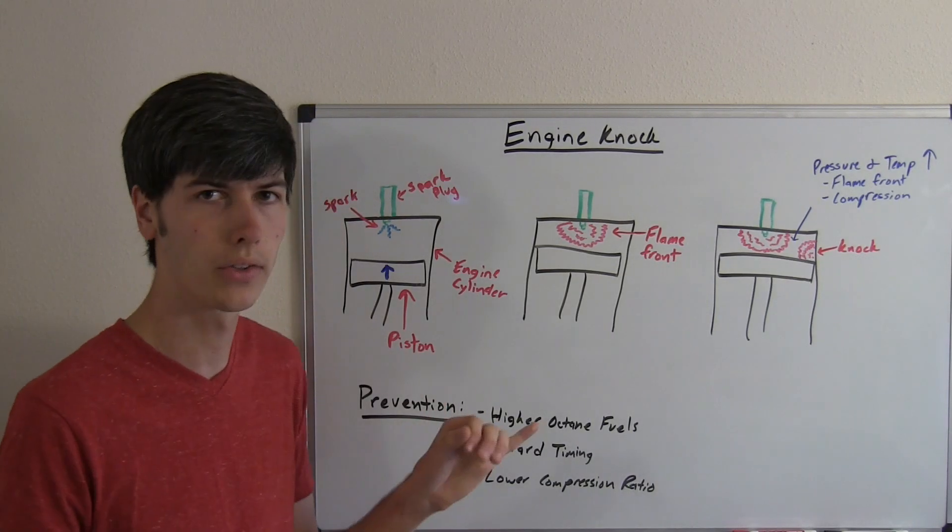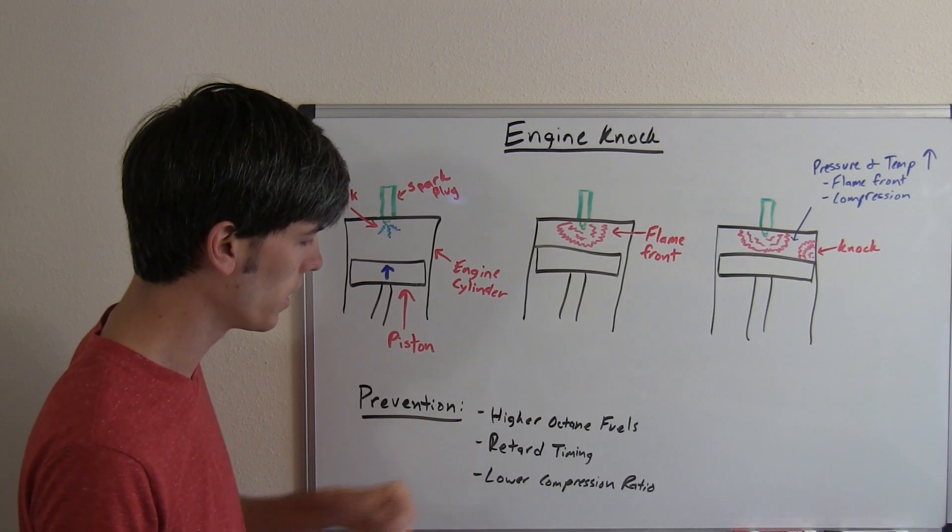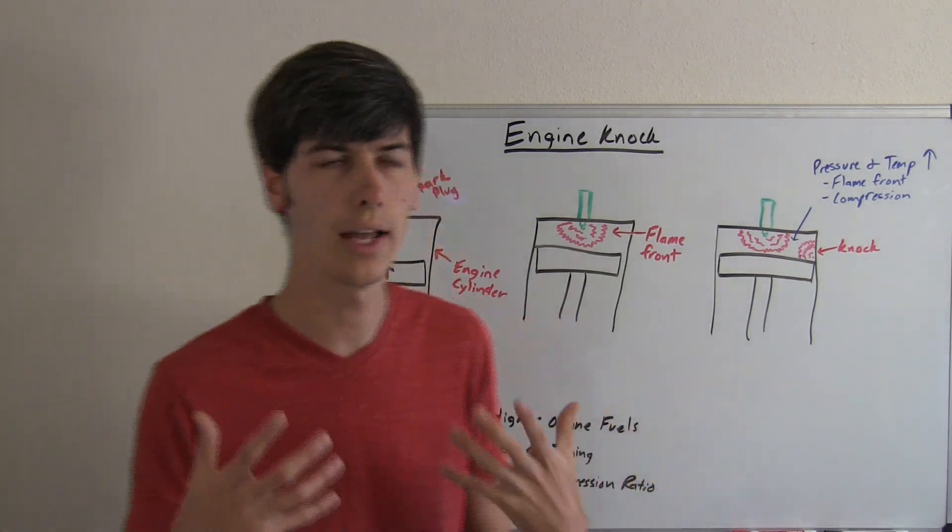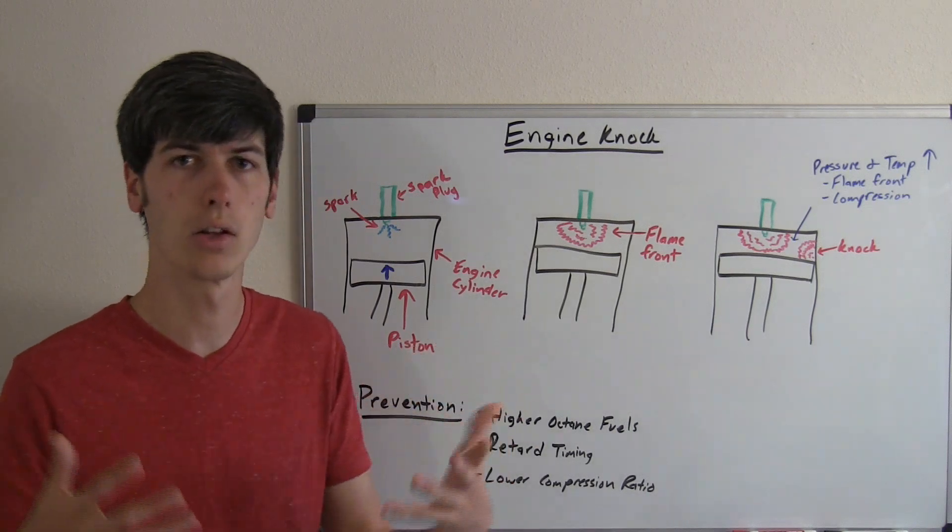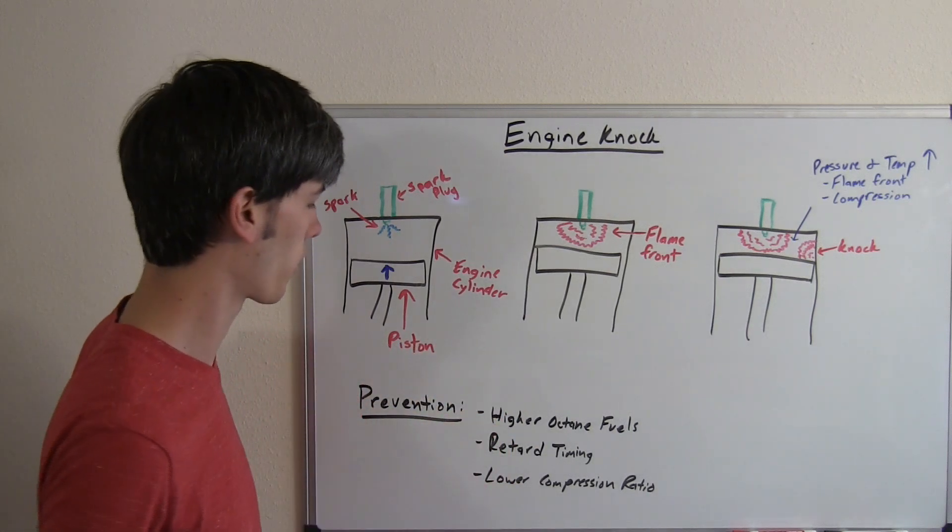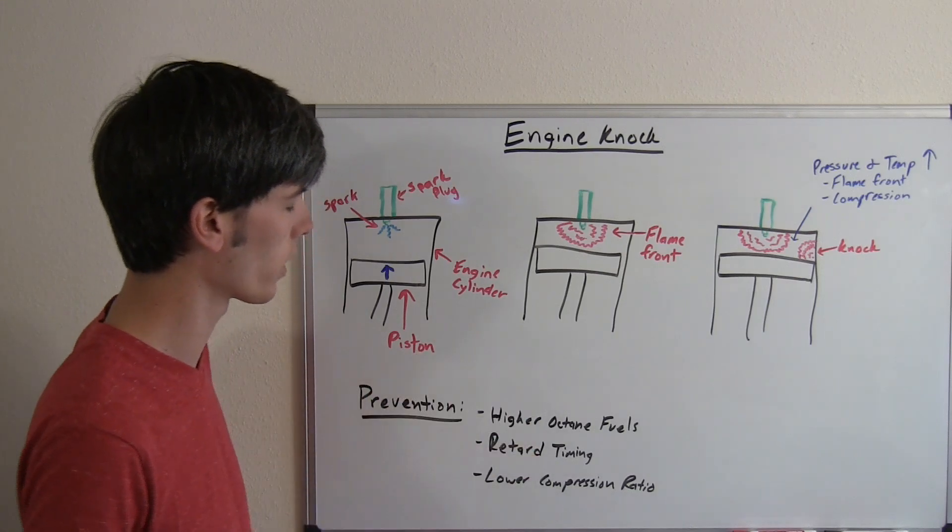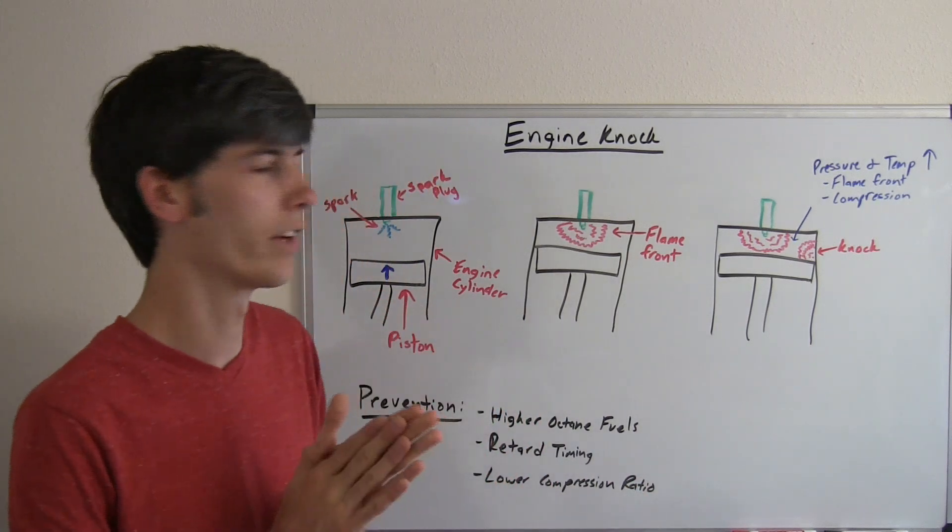Another thing you can do is retard the timing, and I will have a video getting more into detail on this. Finally, as a design change, lower compression ratio engines can run lower octane fuels. They're less likely to knock because they have lower pressures. There are other things, but these are some critical ones that can be used to change the knock characteristics of an engine.